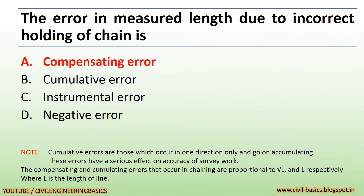The error in measured length due to incorrect holding of chain is a compensating error. Note: cumulative errors are those which occur in one direction only and go on accumulating, and these errors have a serious effect on the accuracy of survey work. The compensating and accumulating errors that occur in chaining are proportional to √L and L respectively, where L is the length of line.